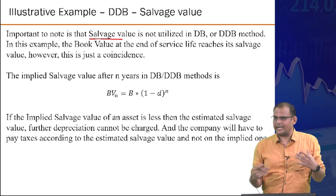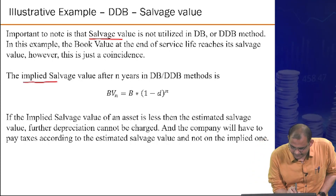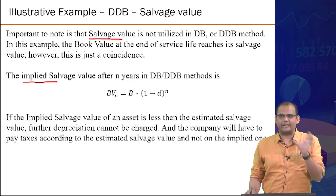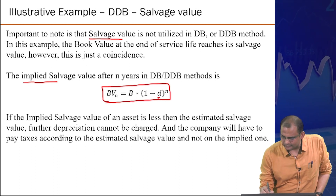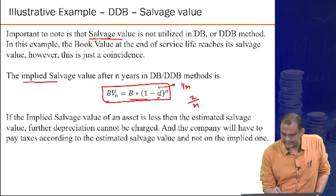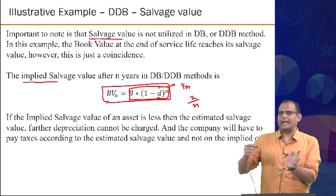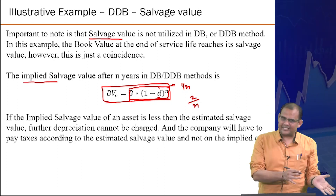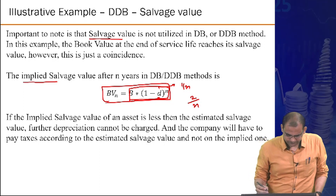At any time t, the implied salvage value using DB or DDB can be calculated from the formula: B × (1 minus d)^t. For DB, d = 1/N; for DDB, d = 2/N. At end of year N, you can estimate the implied salvage value and check if it matches. If not, a different approach is needed.